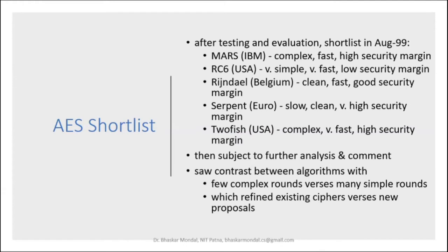Five algorithms were shortlisted out of fifteen after testing and evaluation in August 1999. The first was MARS, proposed by IBM, which was complex, fast, and had a high security margin. RC6, submitted by a US group, was very simple, very fast, but had a low security margin.